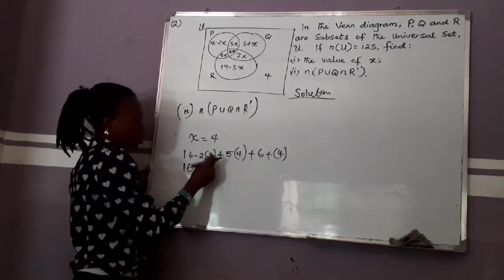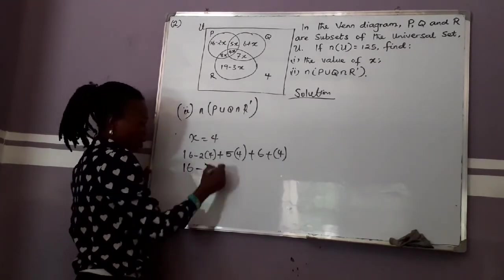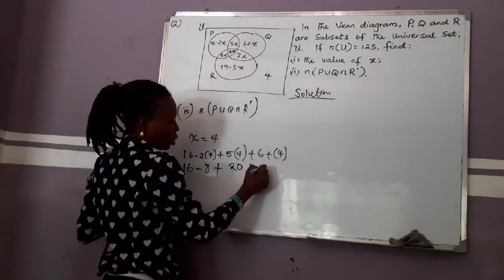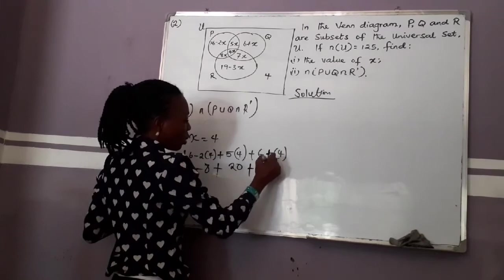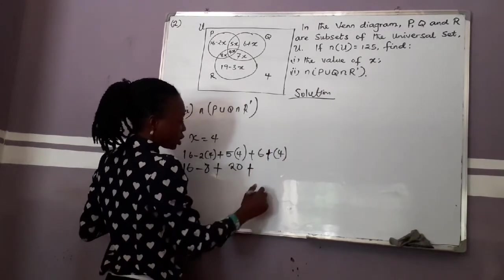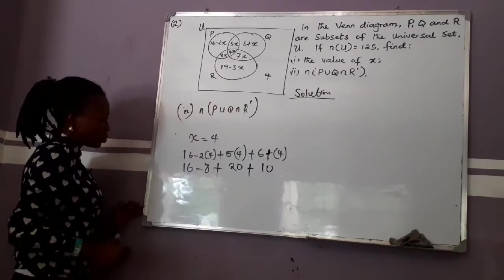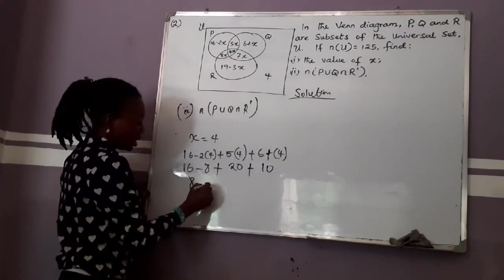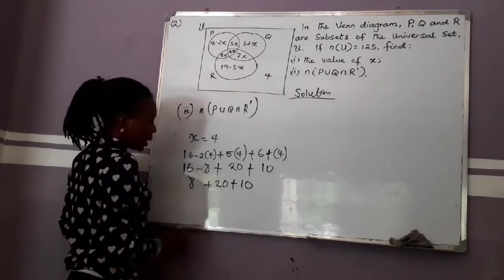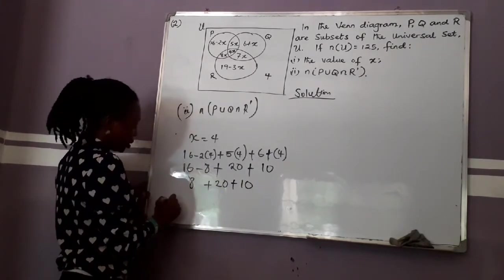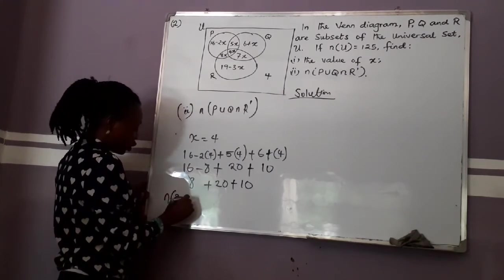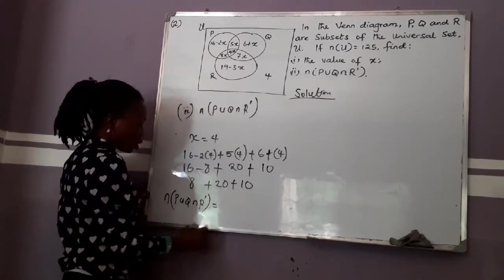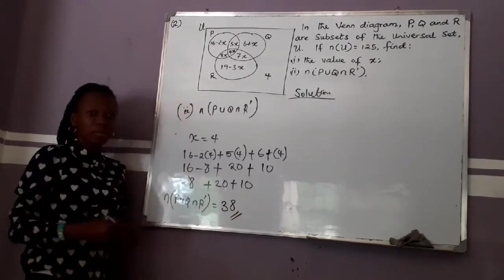So this becomes 16 minus 8, plus 5 times 4 = 20, plus 4, plus 6 = 10. So 16 minus 8 gives 8, plus 20, plus 10. We end up with N of P union Q intersection R prime equal to 38.